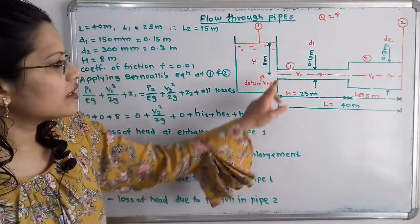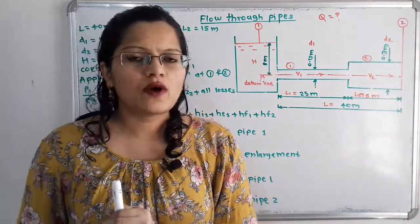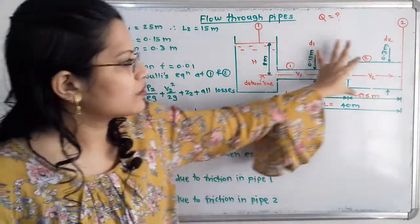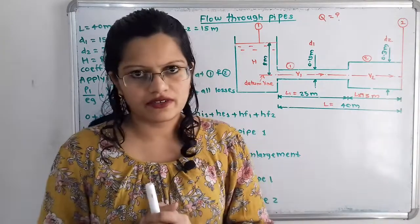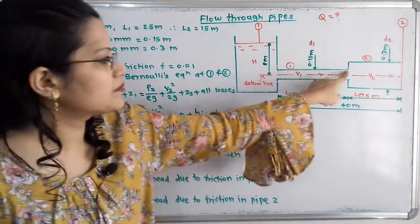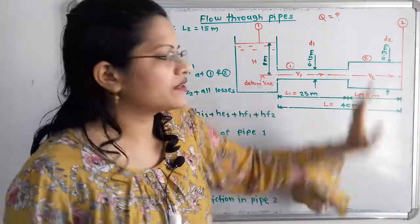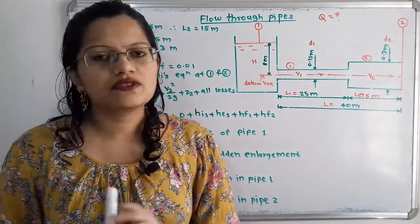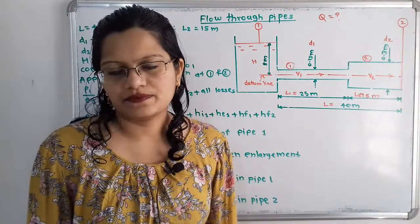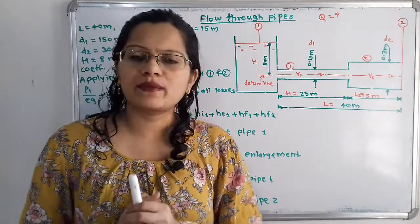This pipe has two different cross-section areas. If the rate of flow Q remains constant, then because of the different cross-section areas the velocity will also differ. For the first pipe we will denote velocity V1, and for the second pipe velocity V2. The direction of velocity is in the same direction as the flow, towards the right. We will consider section 1 and section 2 and apply Bernoulli's equation.